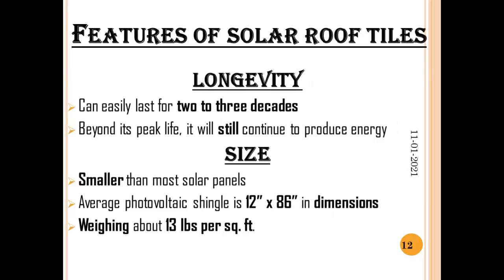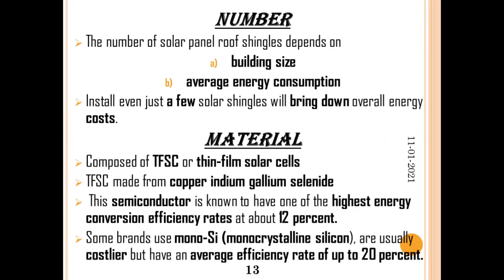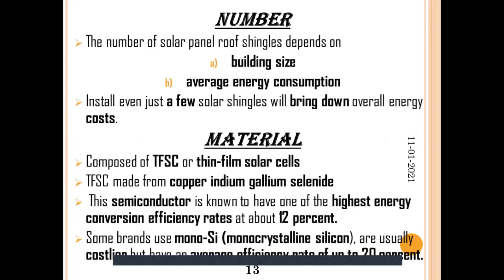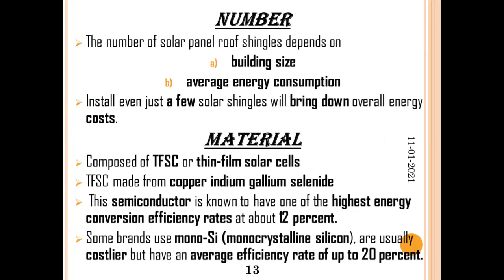In terms of Size, they are smaller than most solar panels, with the average photovoltaic shingle being 12 inches by 86 inches in dimension and weighing about 13 pounds per square foot. Regarding Number, the number of solar panel roof shingles it would take to power a home or building will depend on the building size and average energy consumption. Even if we install just a few solar shingles, it will bring down the overall energy cost. For Material, many of today's solar shingles are composed of thin film solar cells made from copper, indium, gallium, and selenide.